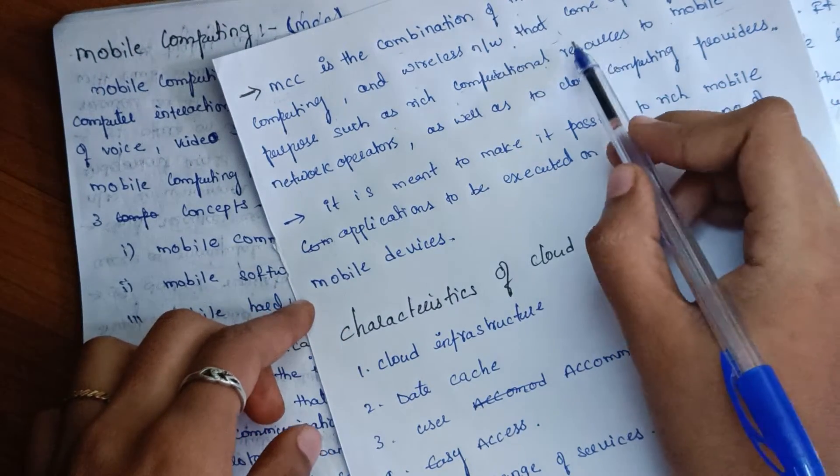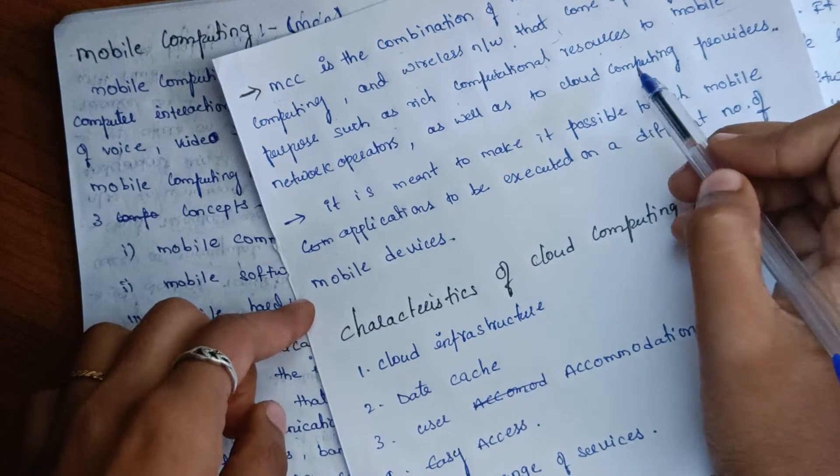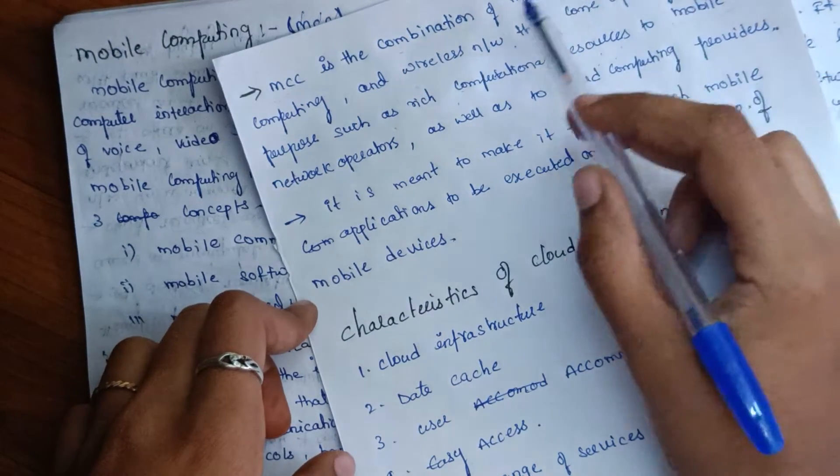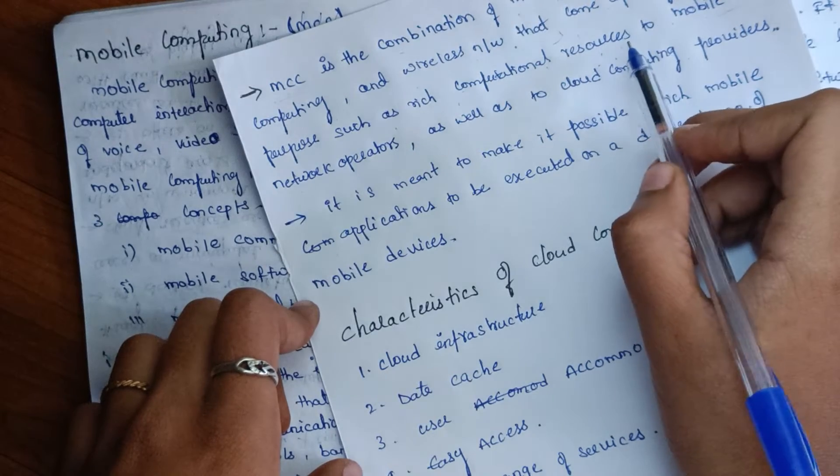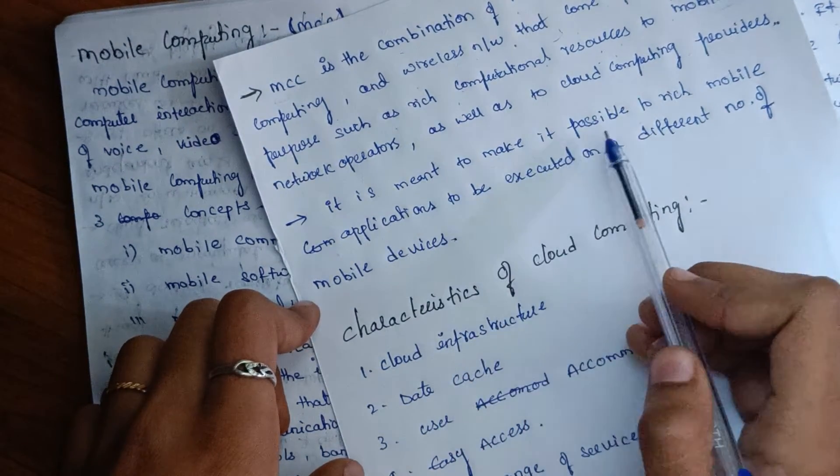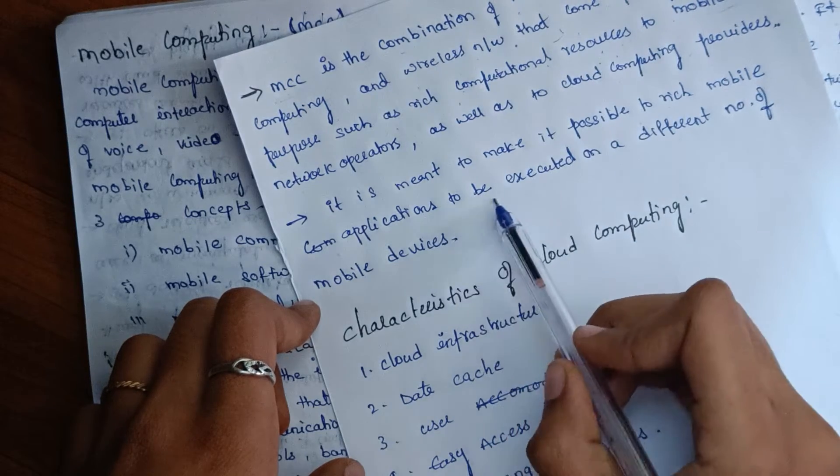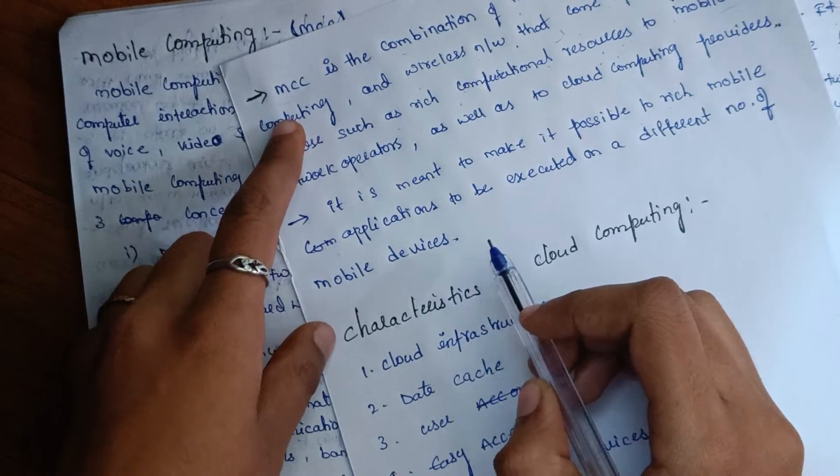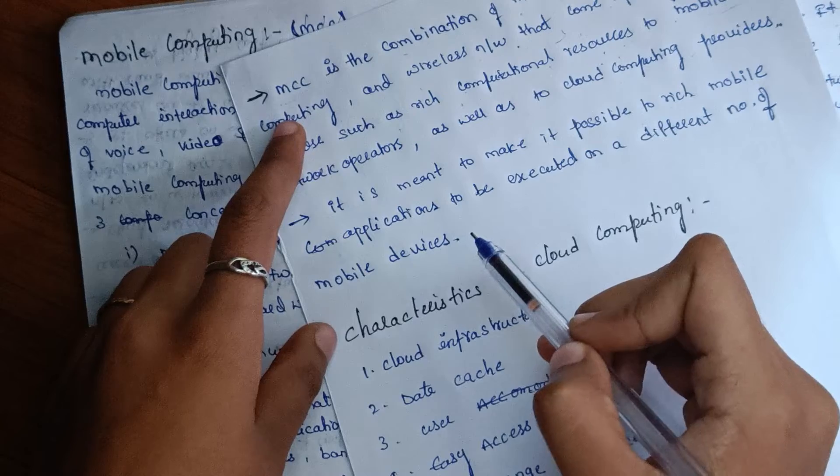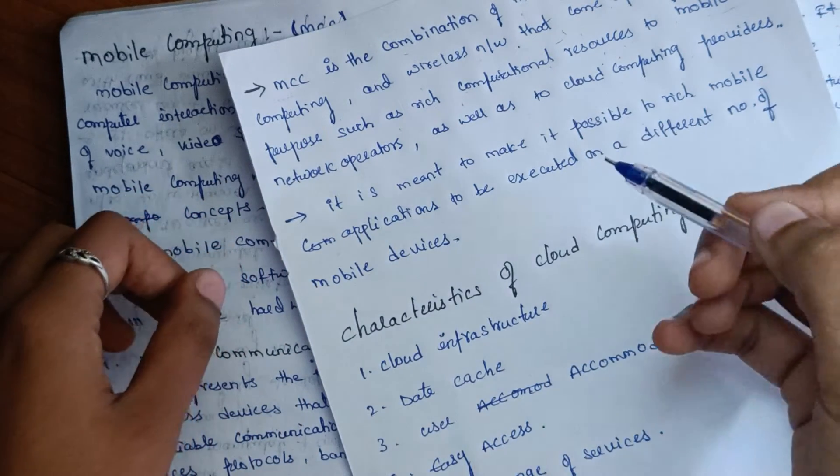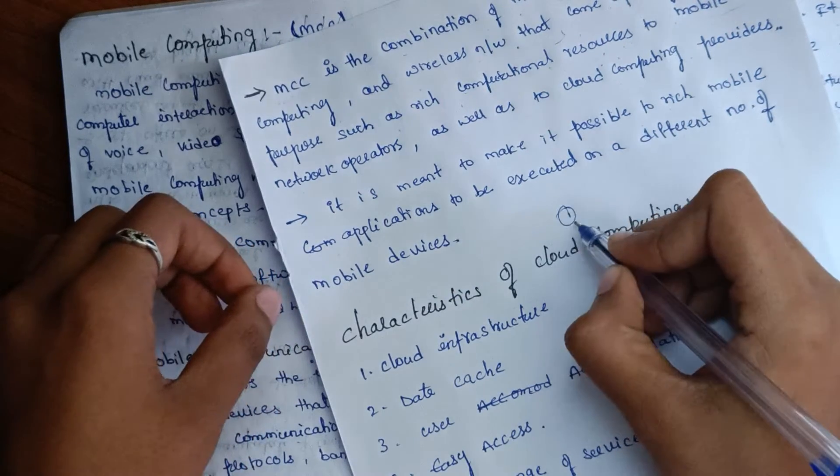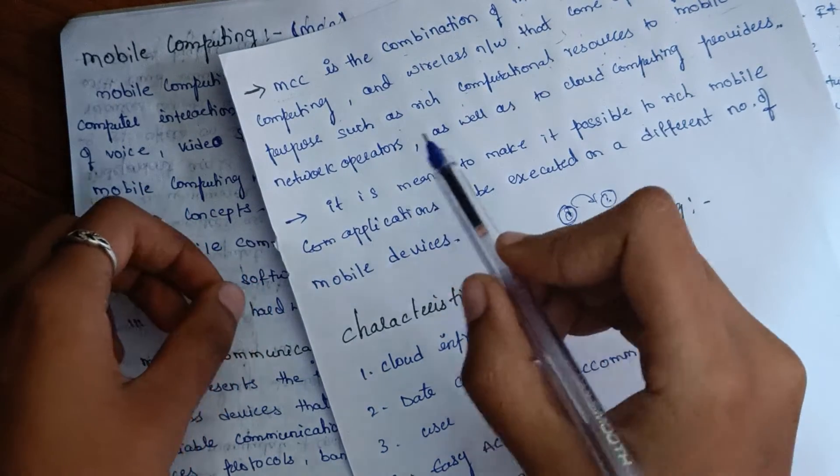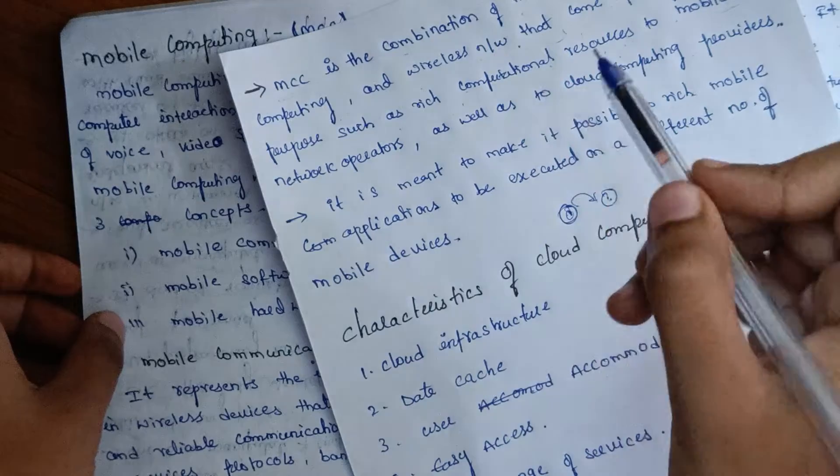When we combine mobile computing with cloud computing, we can provide resources to mobile users. This means we have rich mobile applications and can use different devices to execute various applications. Mobile cloud computing makes this useful and accessible.